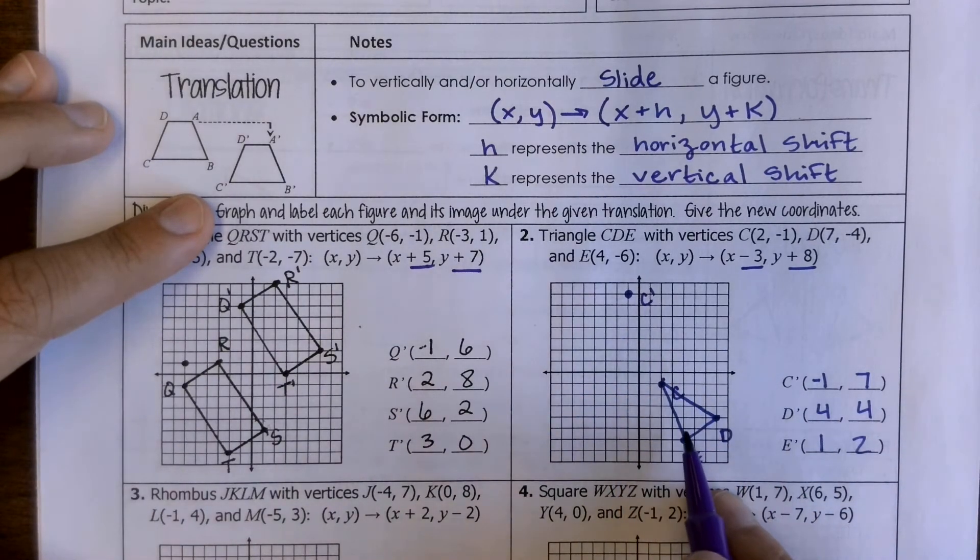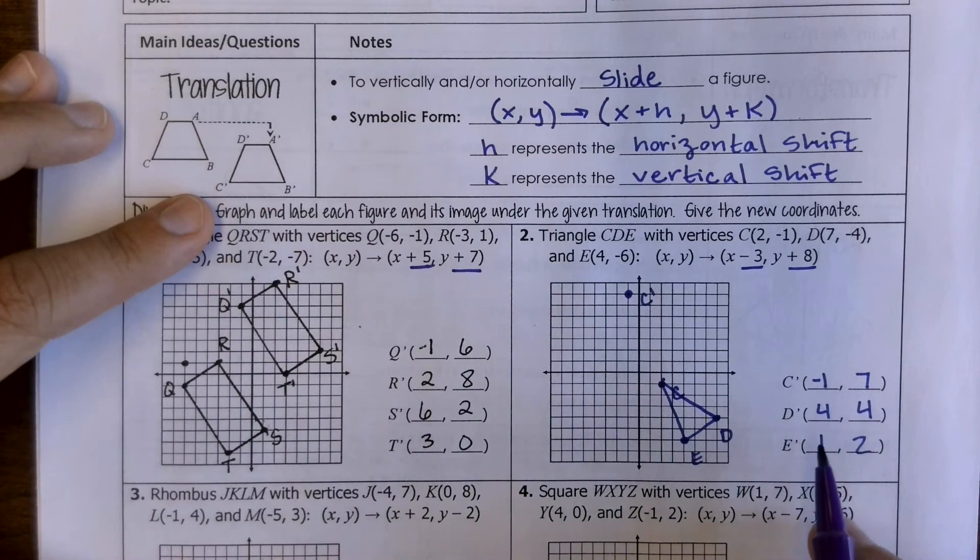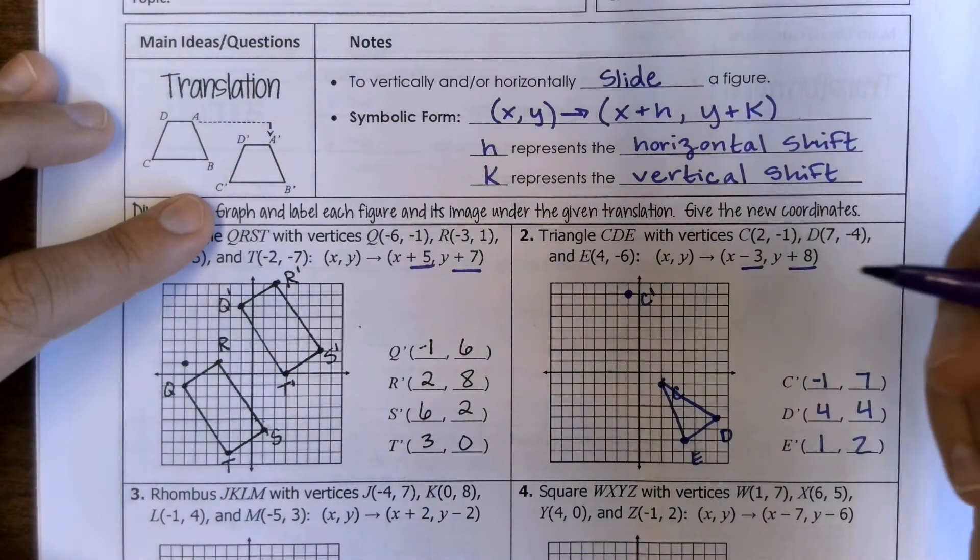So if this doesn't end up looking like the exact same shape, something went wrong. So my D prime is at 4, 4.